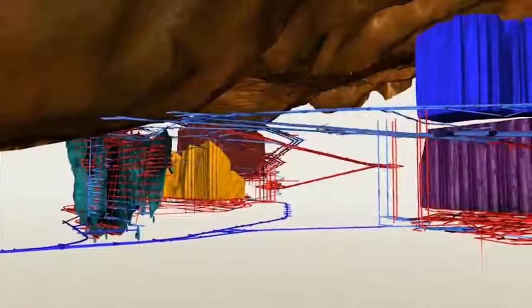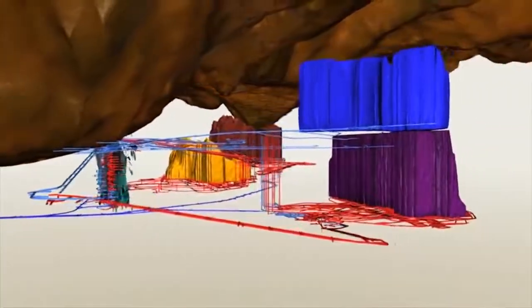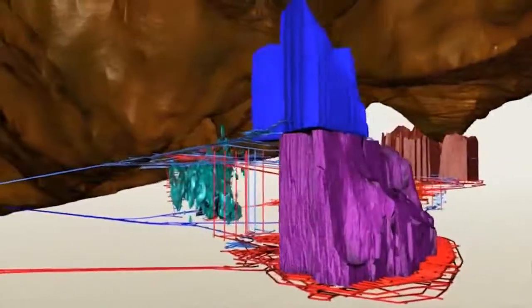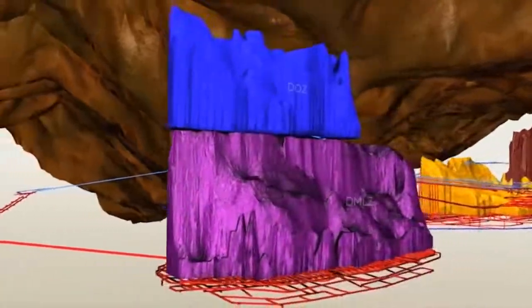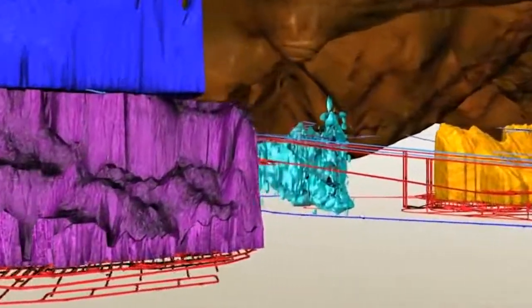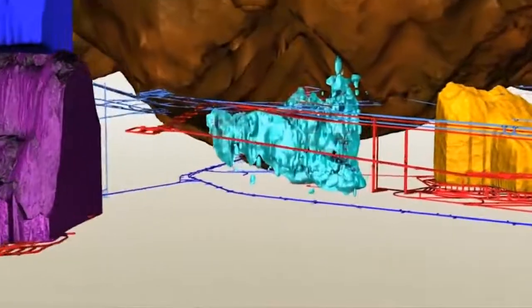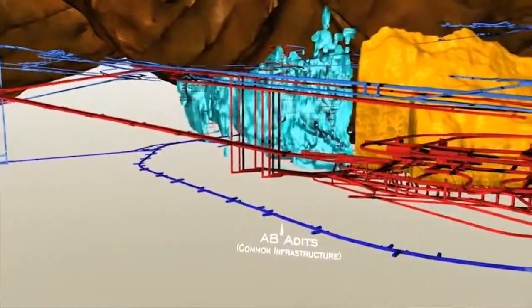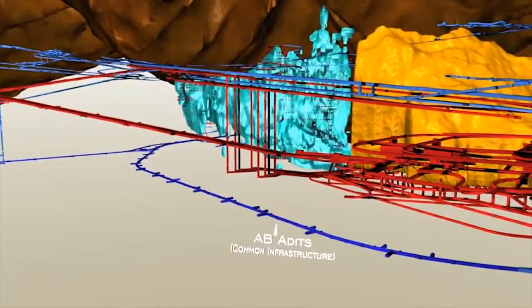It is designed to ramp up to 7,000 tons of ore per day in 2014. And here is the DOZ, or Deep Ore Zone, also currently in production. And below it, the DMLZ, slated for future production around 2015. In total, these underground ore bodies represent 90 percent of the reserves and are the future of our operations.